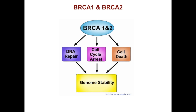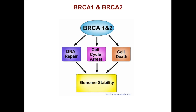These genes are important in DNA repair, cell cycle arrest, and cell death — all important cellular processes that protect cells from becoming cancerous. BRCA1 and BRCA2 are important regulators of genome stability and work to prevent cancer. So when you lose these genes, you're more likely to get breast cancer or other forms of cancer.